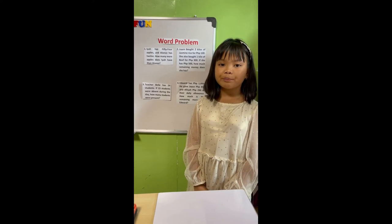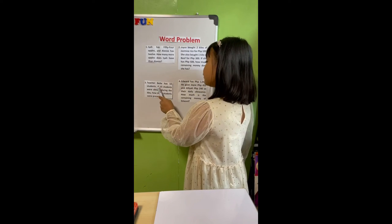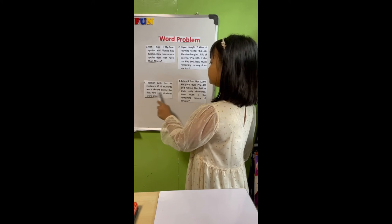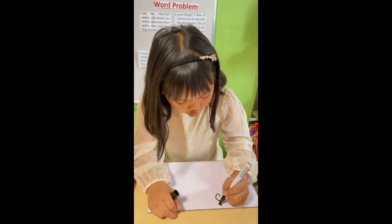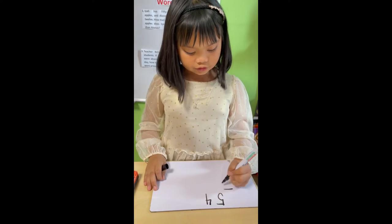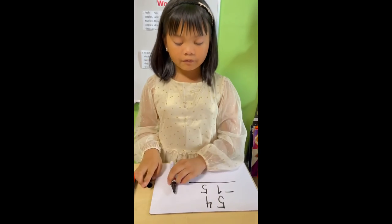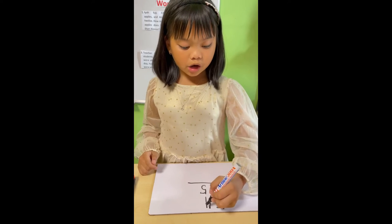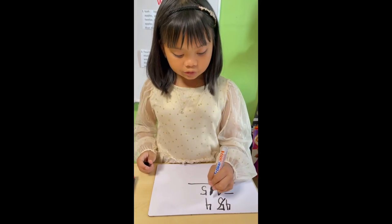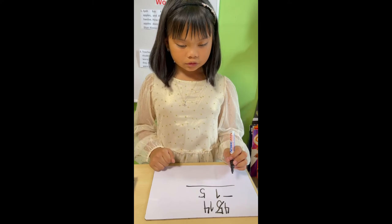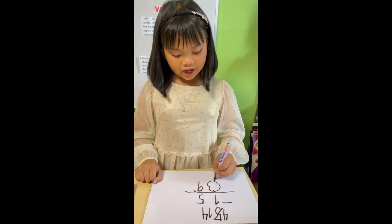Subtraction with regrouping. Word problem. Teacher Bell has 54 students. If 15 students were absent during the day, how many students were present? 54 minus 15: 4 minus 5 cannot be, so we will borrow from the tens. The tens become 4 and the ones become 14. 14 minus 5 equals 9, 4 minus 1 equals 3. The answer is 39 students.